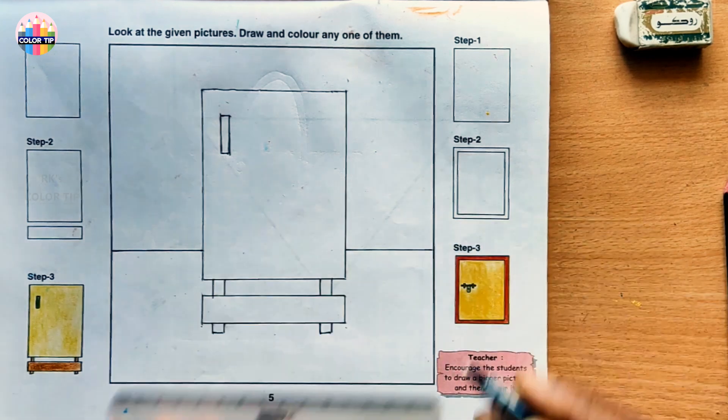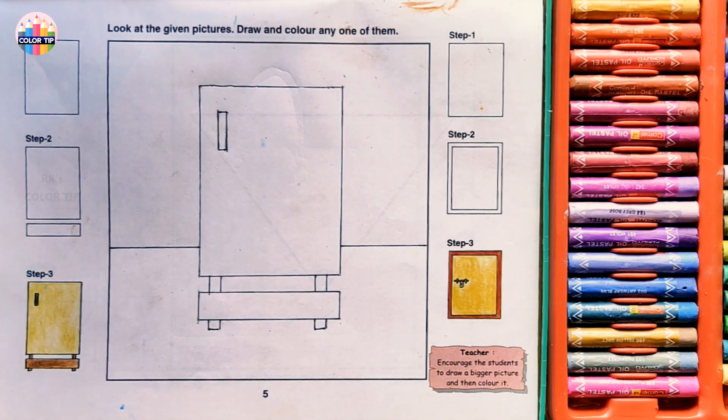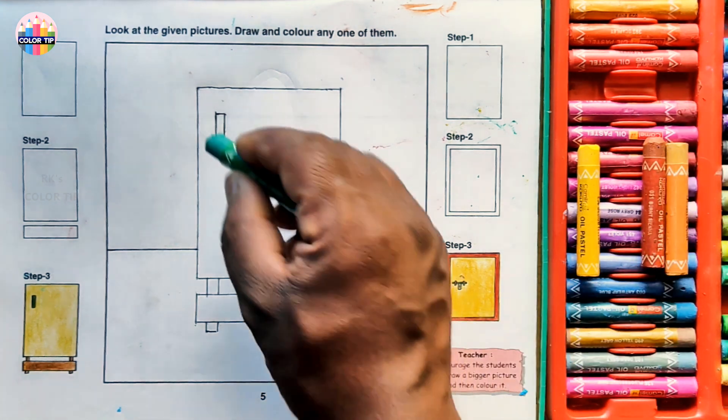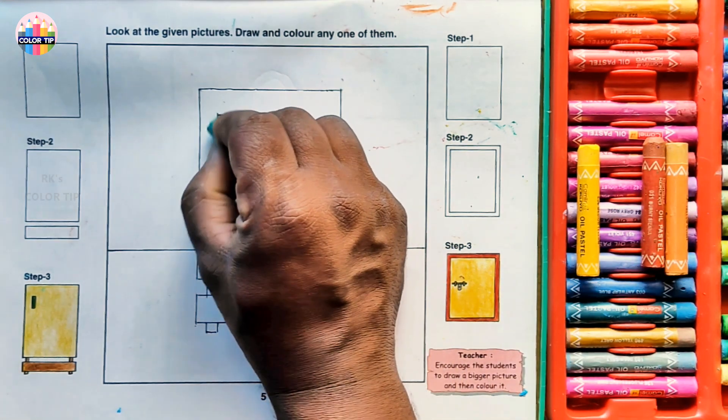Let's start coloring with oil pastels. Let's start with green color. Let's fill this small rectangle.